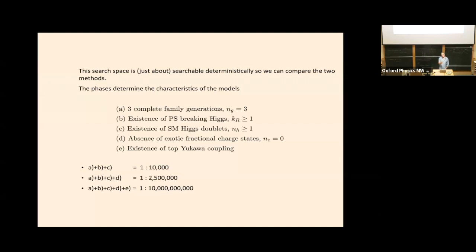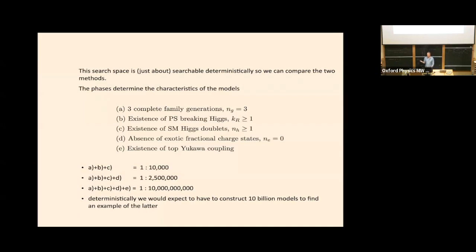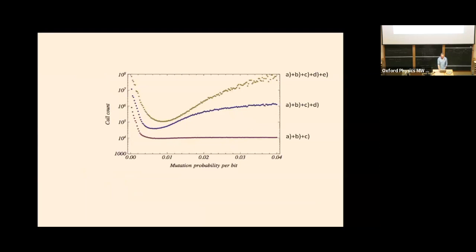As I apply more conditions there are fewer models that fit. If I ask for the first three conditions I've got one in ten thousand; the first four gives one in two and a half million; and if I ask for everything it's one in ten billion models in the parameter space. It's interesting to take those different conditions and see whether the genetic algorithm is actually helpful or not. If I were just doing a random scan I would have to construct 10 billion models in order to find one perfect one.